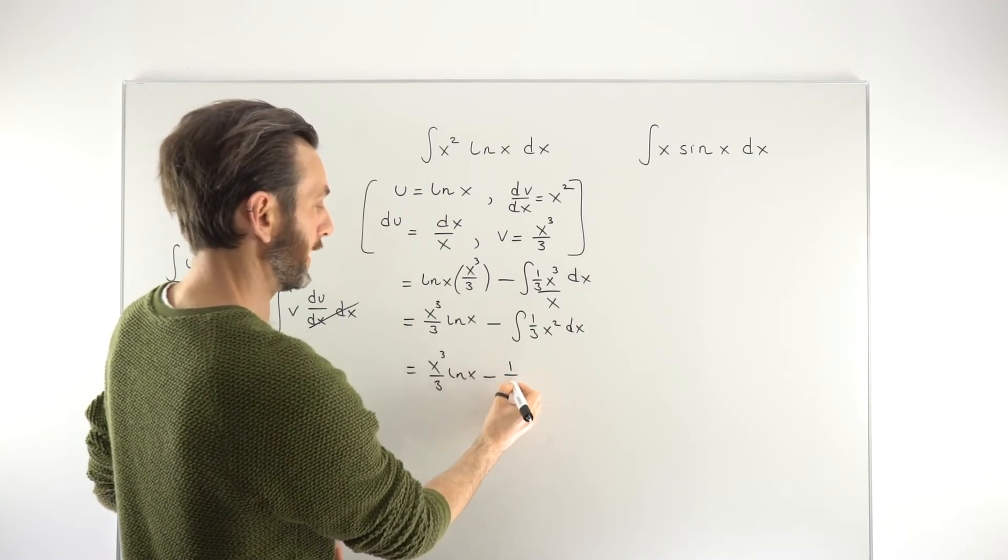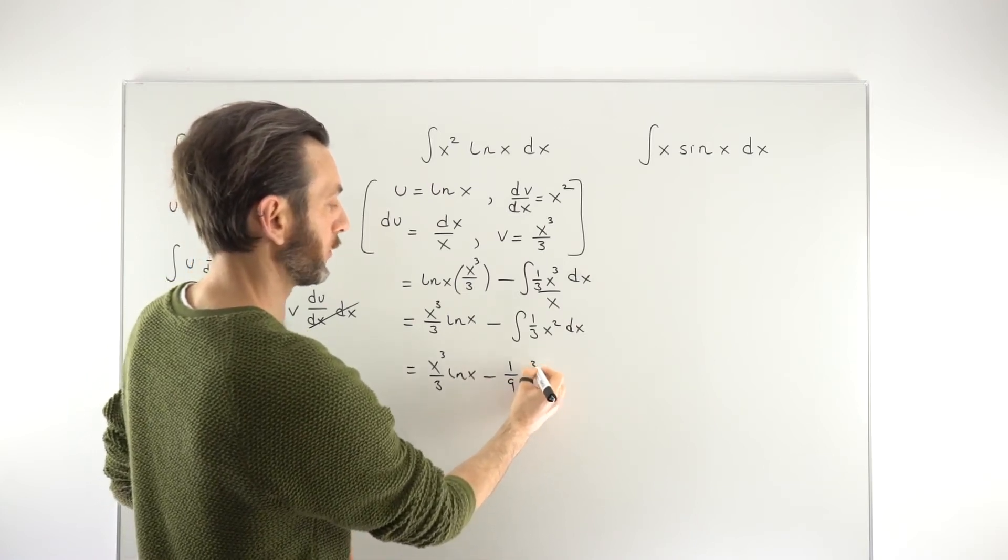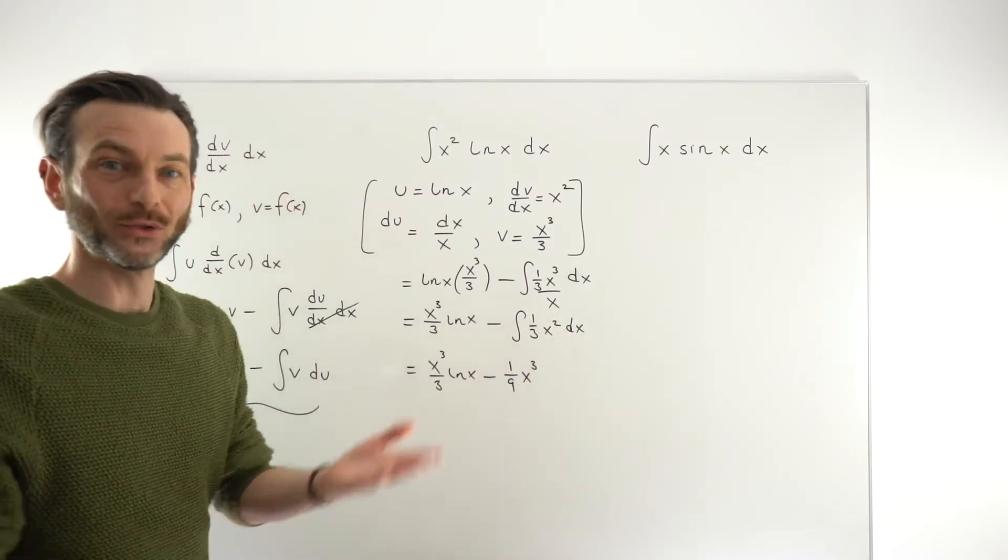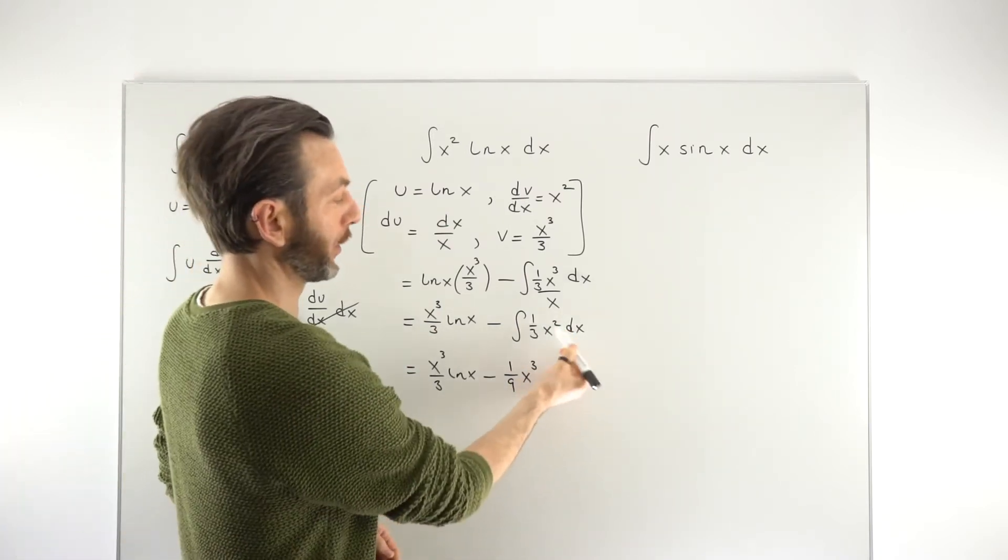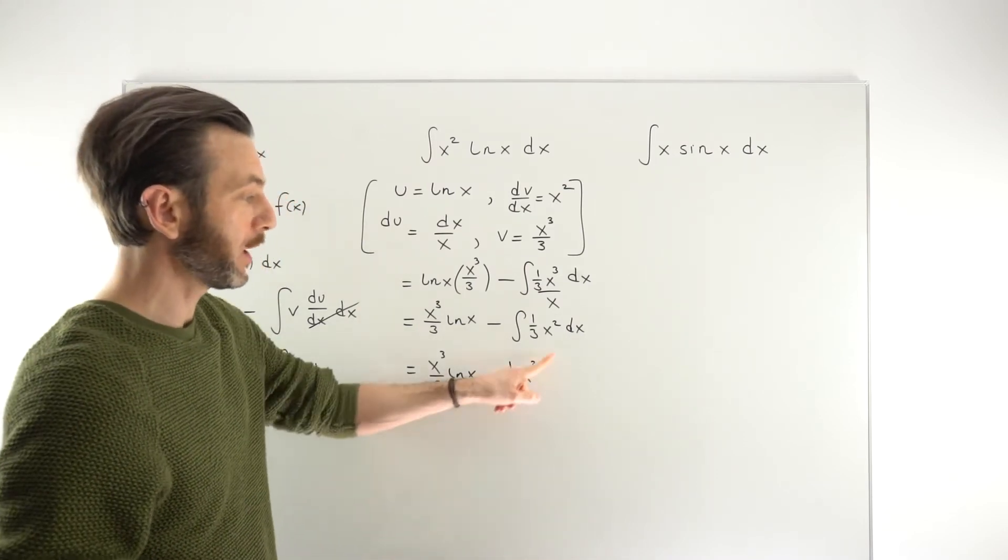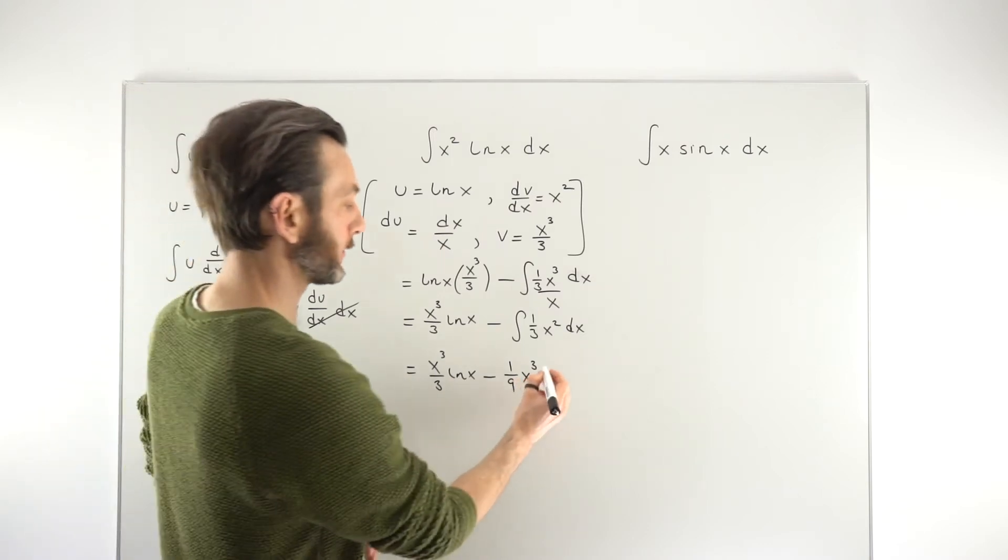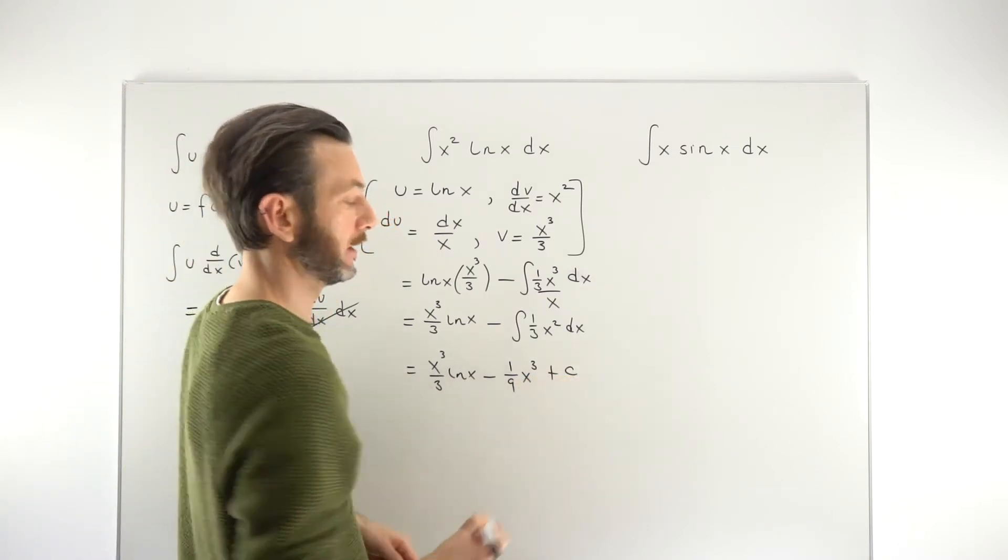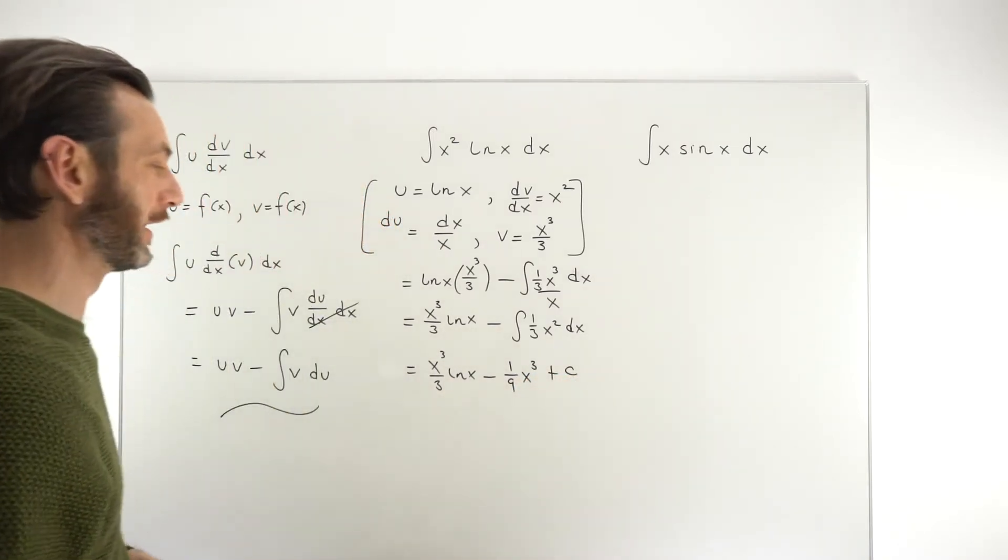which is going to be x cubed, well, 1 over 9, sorry, x cubed. So it's just increasing the power by 1, dividing by the new power. If you divide one third by 3, you get one ninth. So that is basically just using the power rule on this guy to get to this guy. And then at this stage, we could put our plus c, our constant of integration on the end.